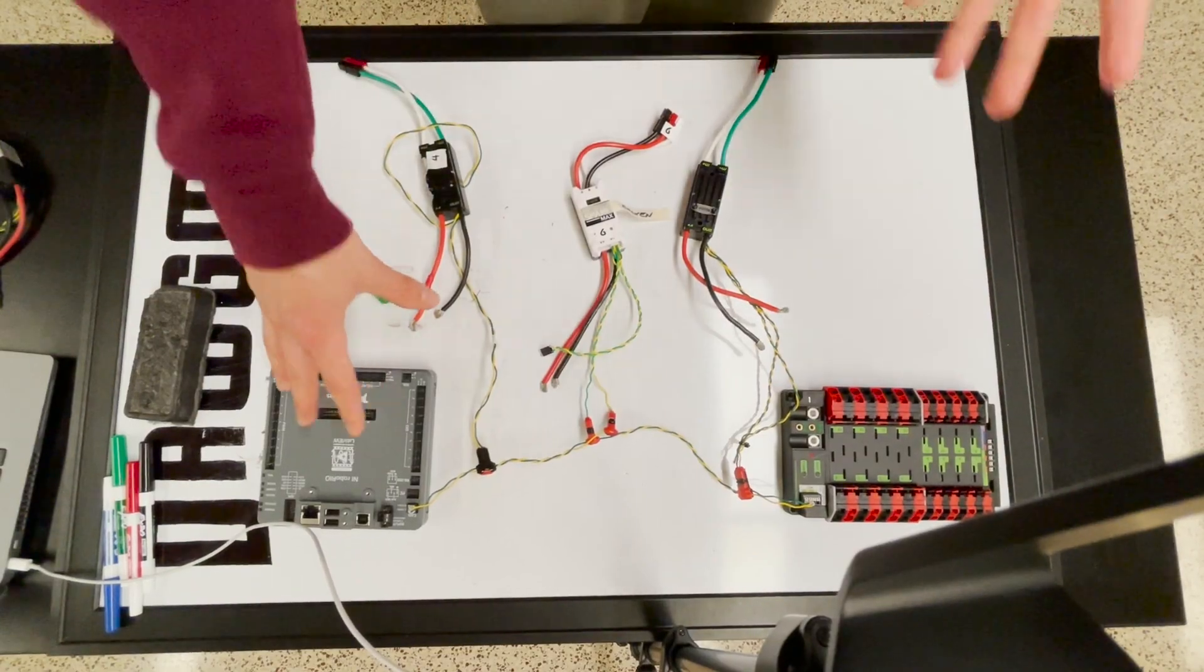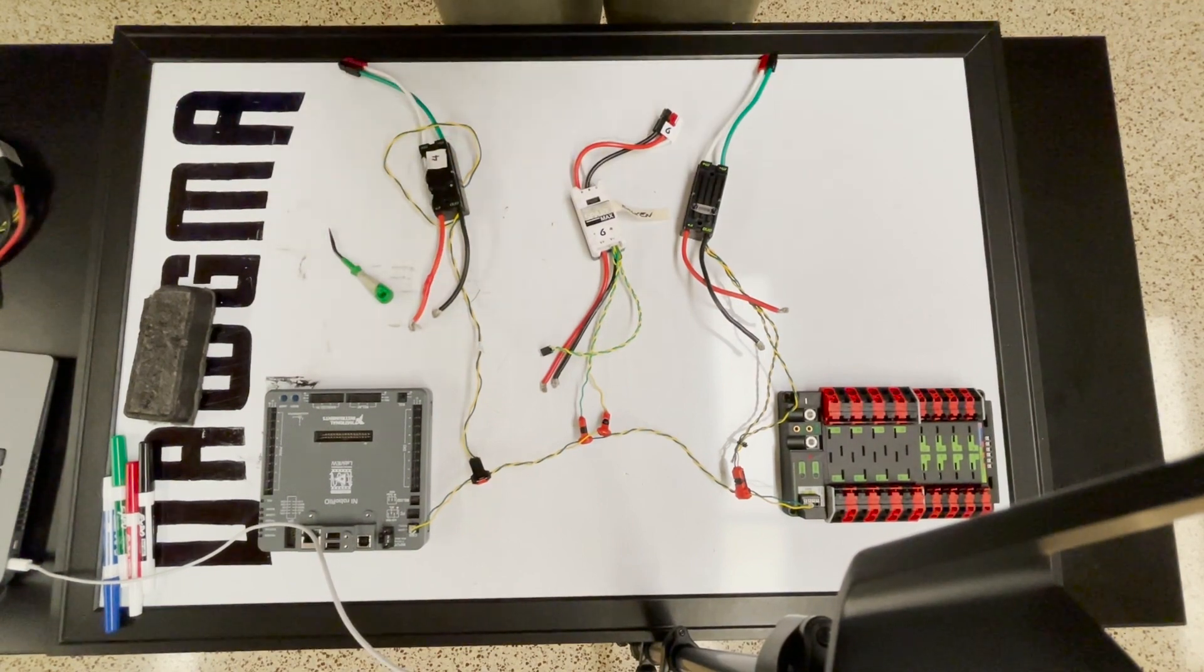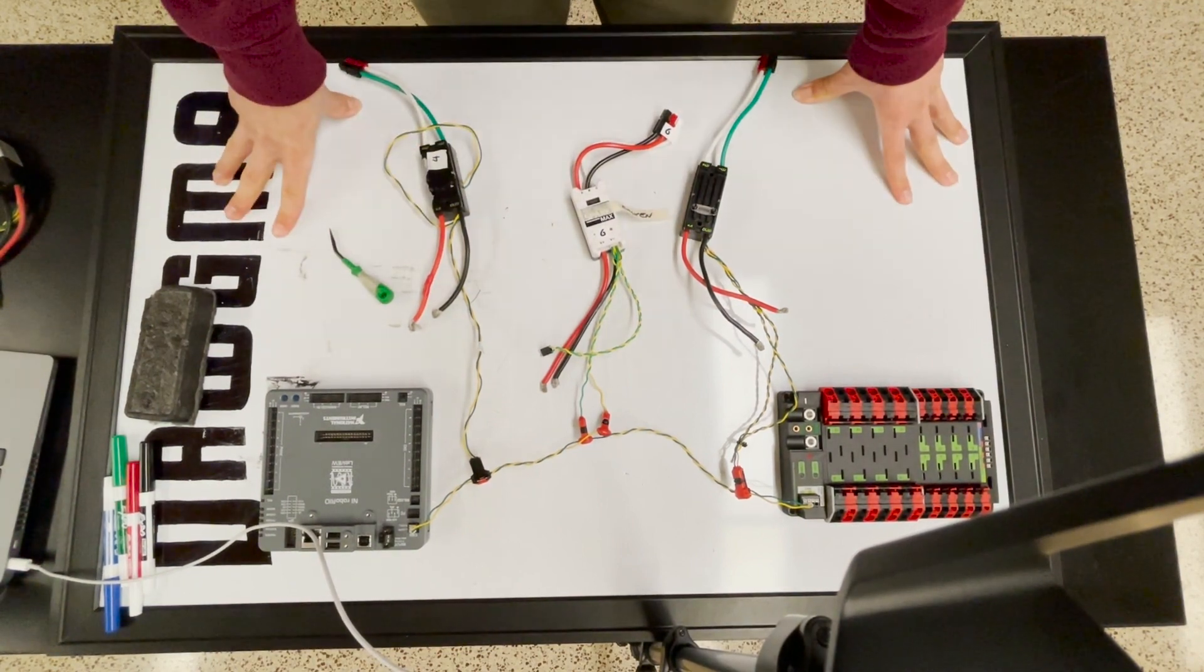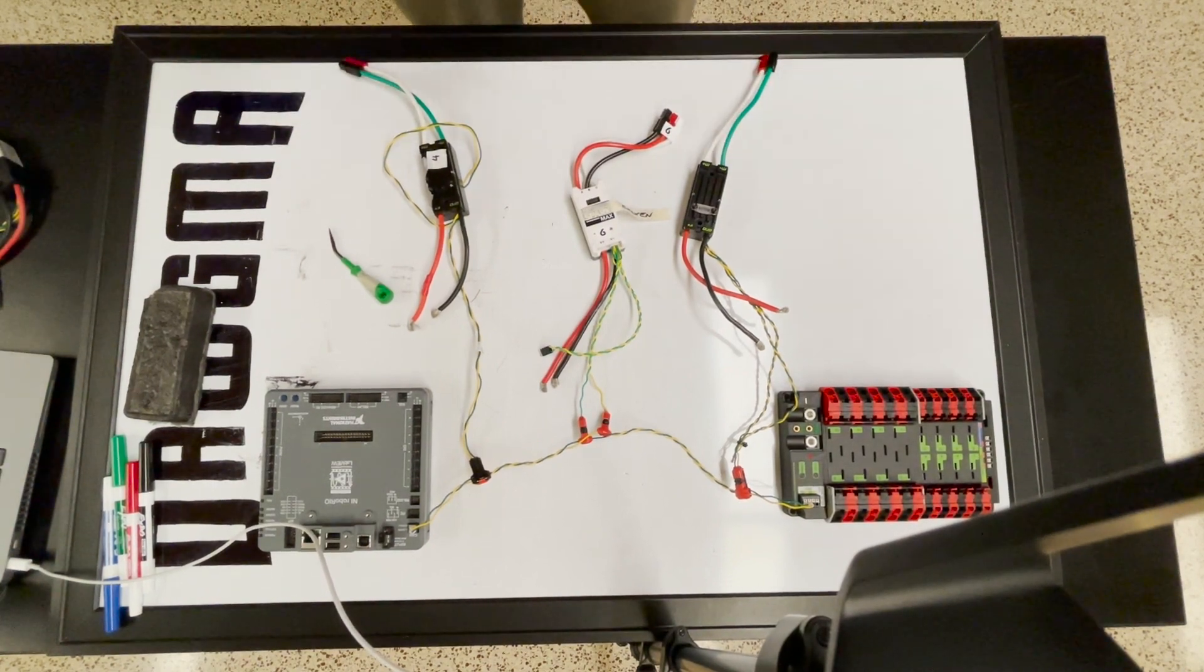Now, one of the reasons why we use the PDP and RoboRio as the ends of our CAN bus here is because they both come with integrated 120 ohm resistors. Now, that is not a necessity.